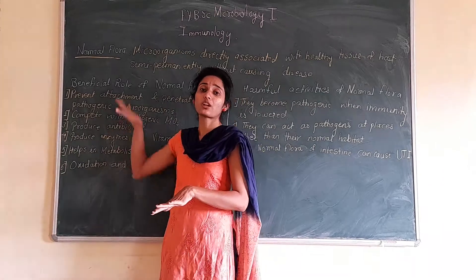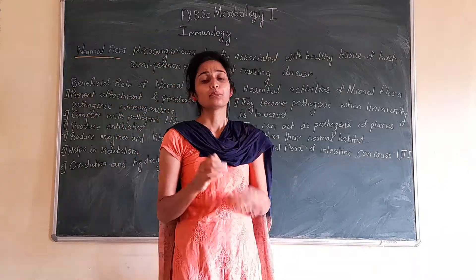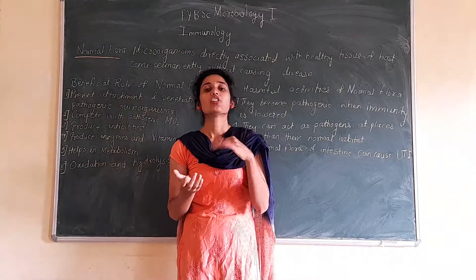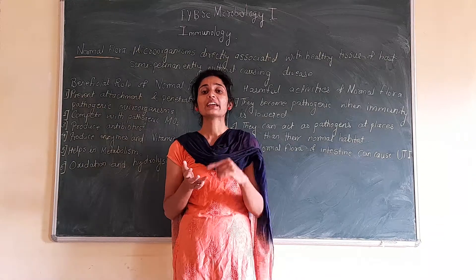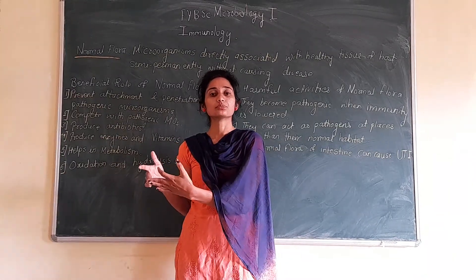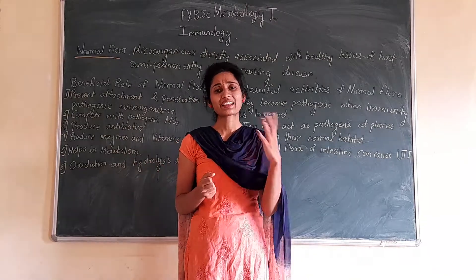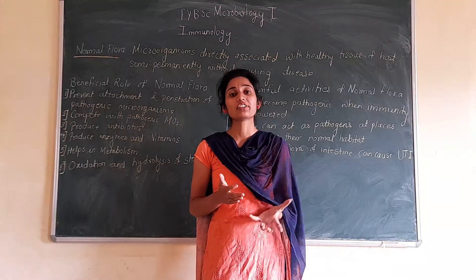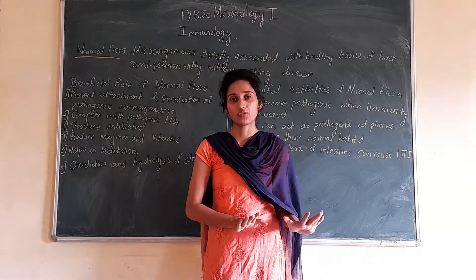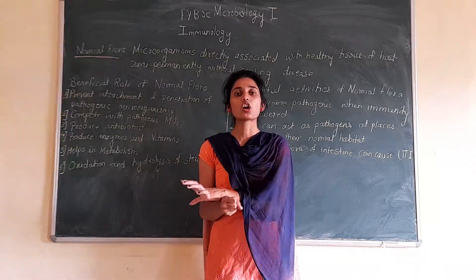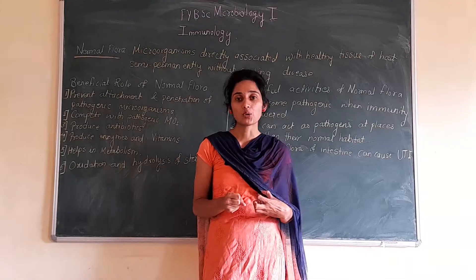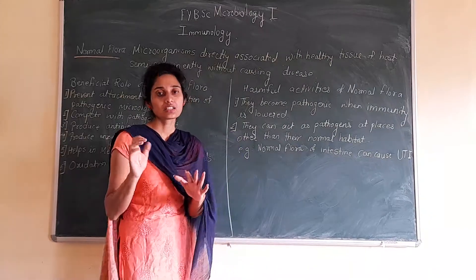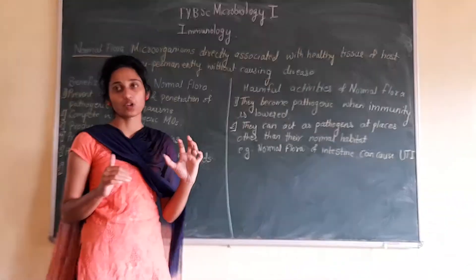These microorganisms are known as normal flora, and these normal flora microorganisms can be present in different types of organs. For example, external organs like the gastrointestinal tract, intestine, kidney, or urinary tract. Some internal organs such as the brain, heart, or even blood are generally present in a sterile form. If microorganisms are found in such internal organs, it indicates a state of infection.